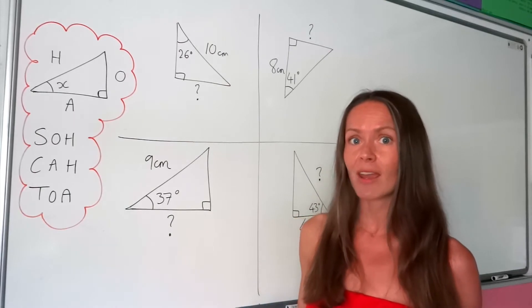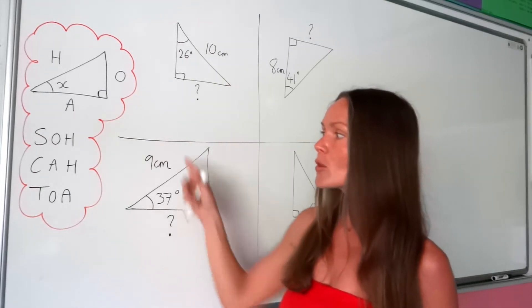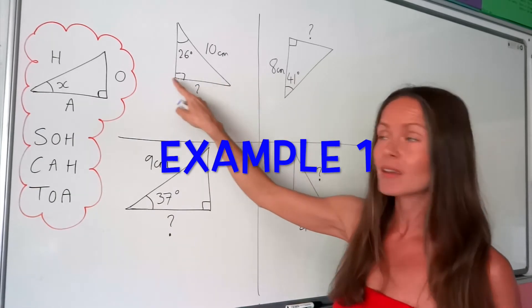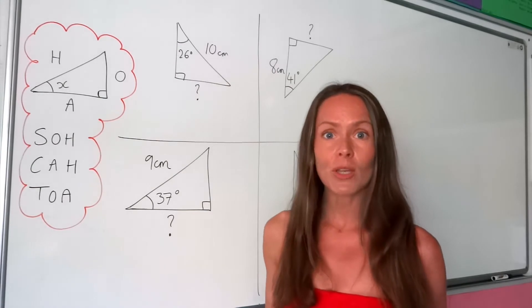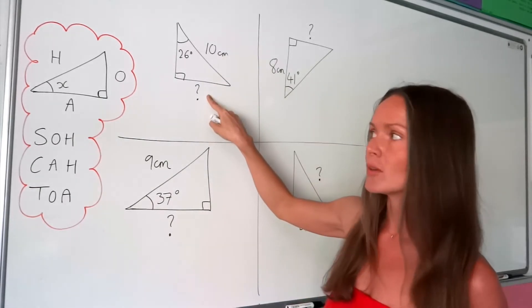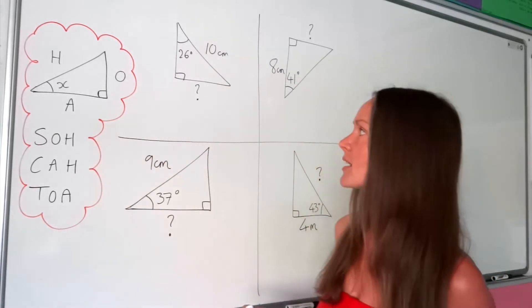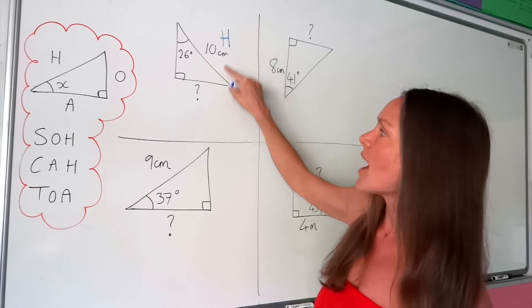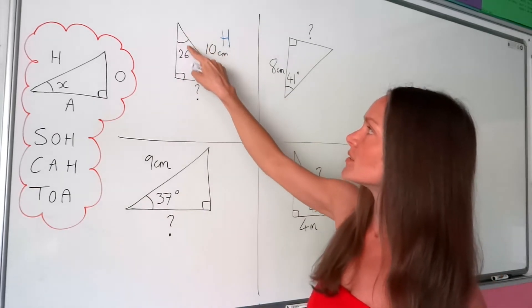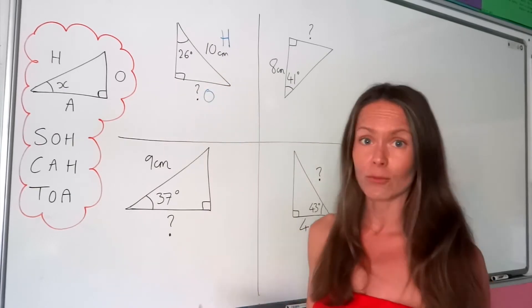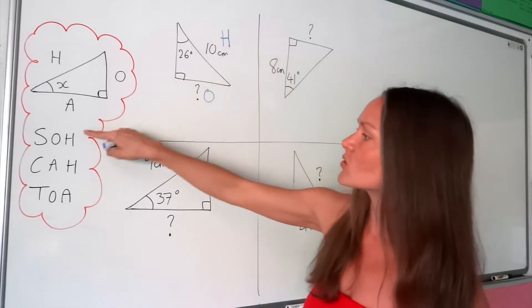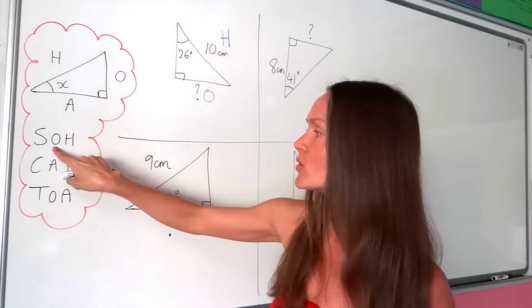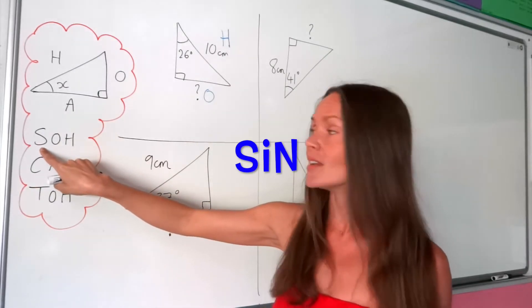It's really important that you label your triangles correctly at the beginning of the question, so that you choose sine, cos or tan correctly as well. So let's look at the first question. I've got to work out this length here in the triangle. When we're labelling the sides, we only label two sides — the one we know and the one we want to know — because then we know which one we're going to choose: sine, cos or tan. Remember, the hypotenuse is the one that's opposite the right angle, so it's that one there.